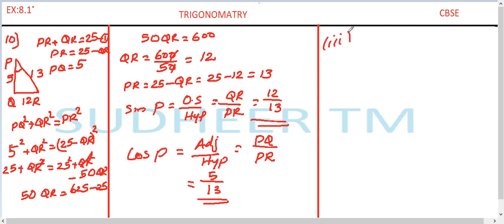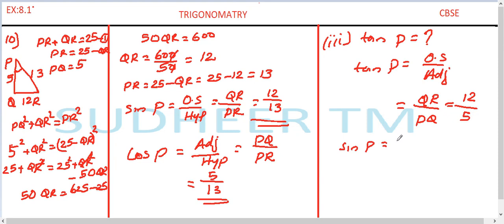Third, tan P equal to how much. By definition, tan P is equal to opposite side divided by adjacent side. The opposite side is QR divided by adjacent side is PQ, which is equal to 12 divided by 5. Therefore, we have the final answer: sin P equal to 12 divided by 13, cos P is equal to 5 divided by 13 and tan P is equal to 12 divided by 5.